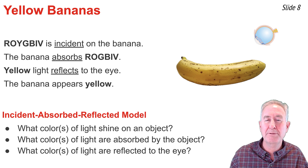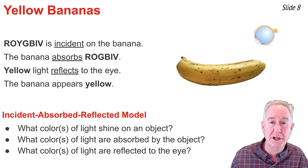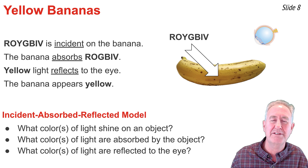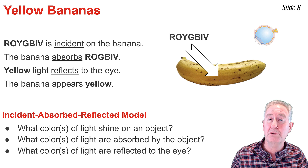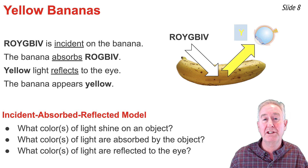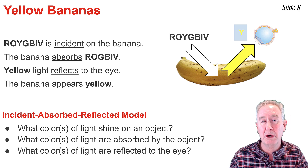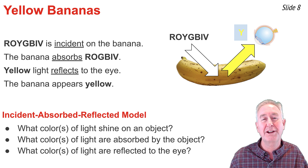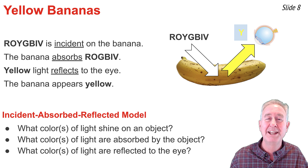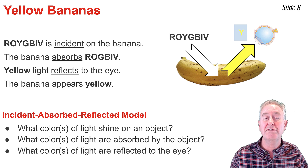As a second demonstration of the incident-absorbed-reflected model, let's consider white light shining on a yellow banana. The colors incident on the object are ROYGBIV wavelengths of white light. If the yellow banana absorbs ROYGBIV wavelengths except yellow, then the only color not absorbed is yellow. So yellow light is reflected to the eye, causing the red and green cones to undergo a physiological response. The brain interprets the information to say: I'm looking at a yellow object. Observe how answering the three questions in order determines the color appearance of the object.